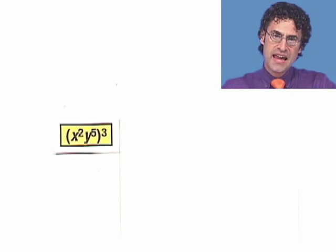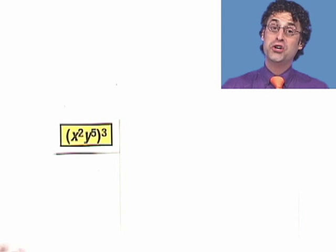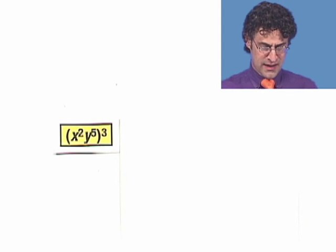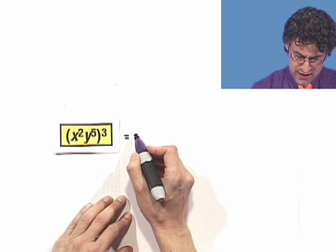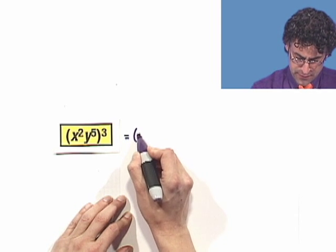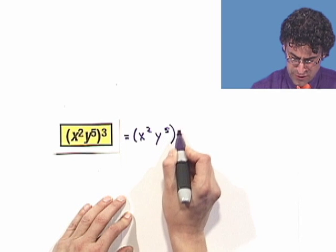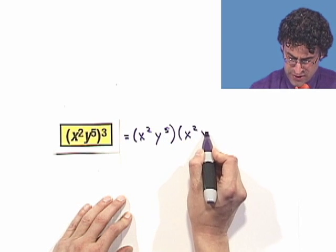Let's put these ideas together and see what happens. Let's take a look at this example. I take the quantity x squared times y to the fifth and I'm going to cube that whole thing. What am I going to get? What this means is I'm going to take x squared y to the fifth and multiply it by itself three times.